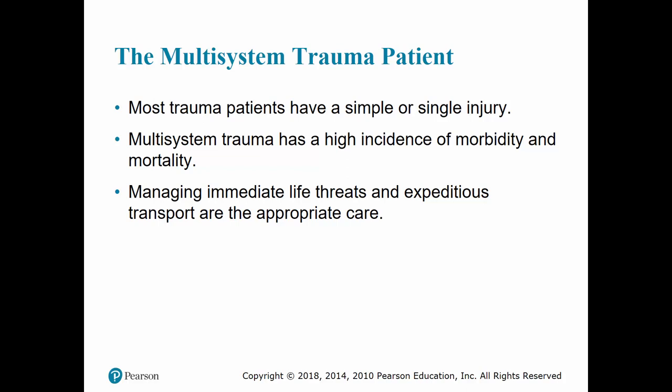Approximately 90% of trauma patients have a simple or single injury that involves only one body system, such as a fractured tibia or a soft tissue laceration with no major bleeding. A multi-system trauma patient has multiple injuries or involvement of more than one body system — including the central nervous, pulmonary, cardiovascular, gastrointestinal, urinary, reproductive, musculoskeletal, and integumentary systems. Multiple organ injuries count as multi-system trauma even though they may be part of the same body system.